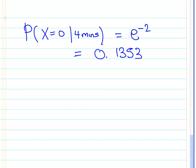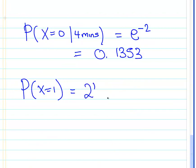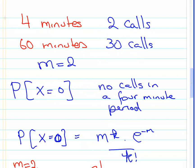Now I'm also going to calculate the probability of X equal to one. Using the same formula, that is two to the power of one times e to the minus two, all over one factorial. This gives two times e^(−2), which is two times 0.1353, giving approximately 0.2706 — about 27%.